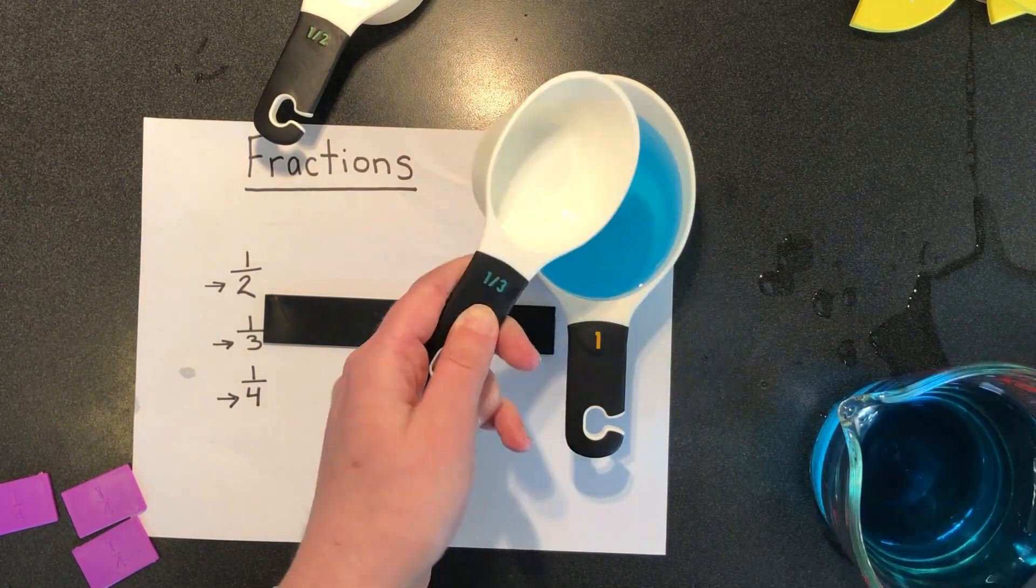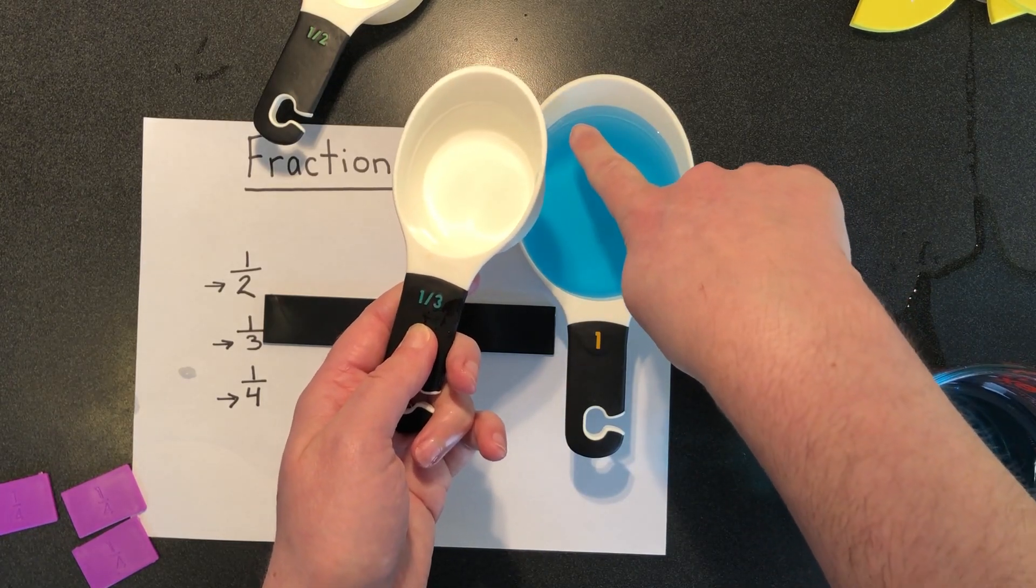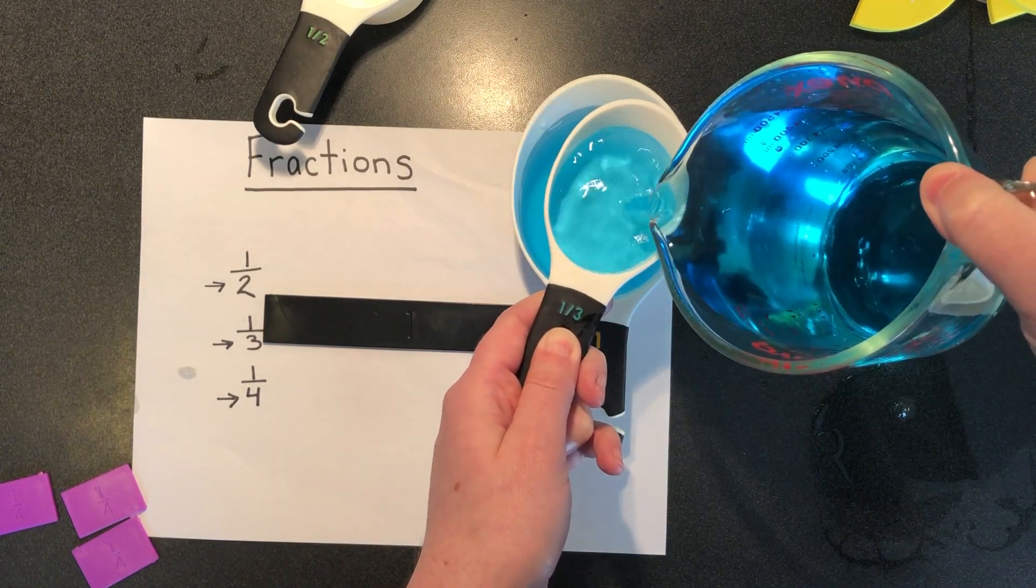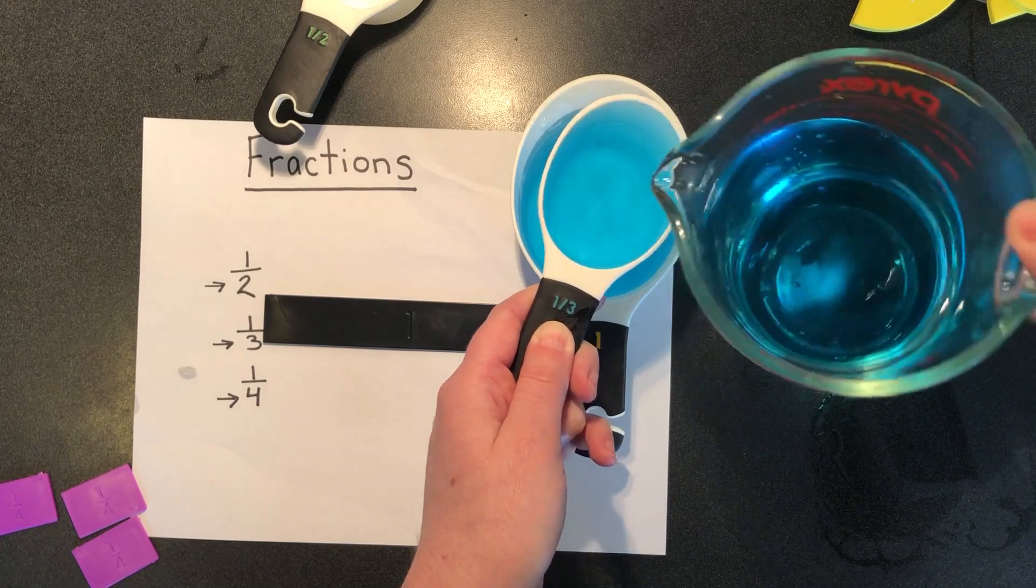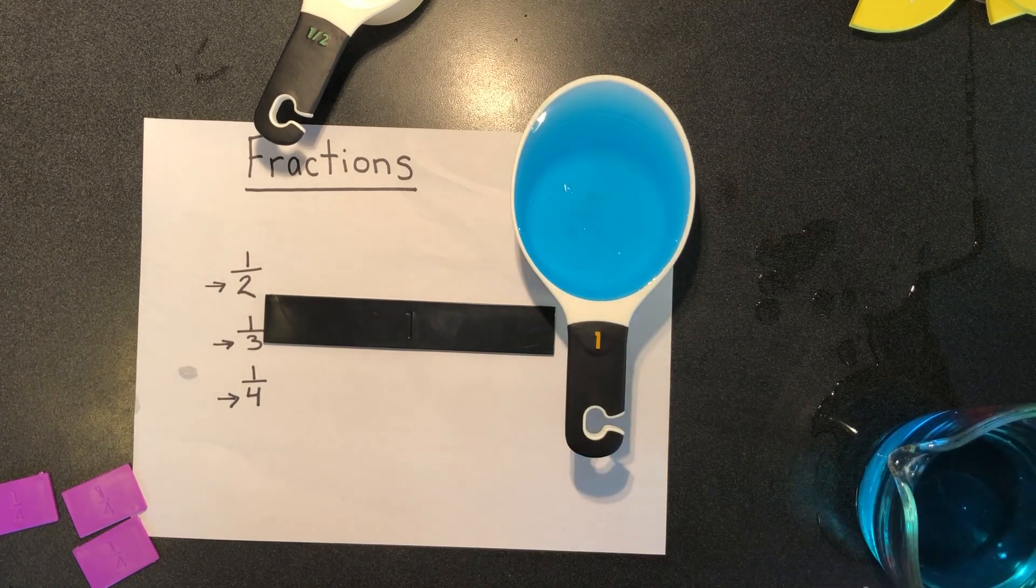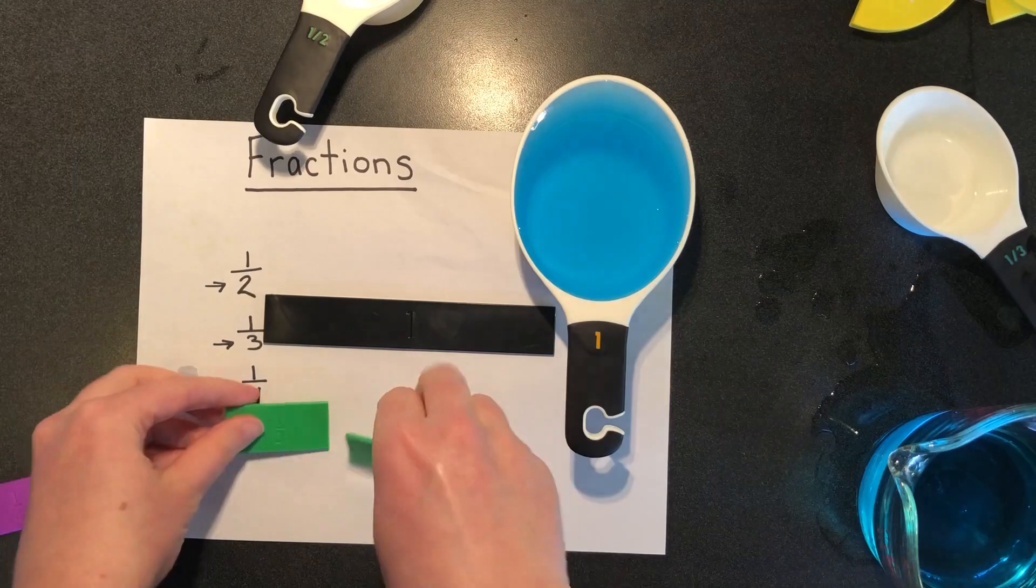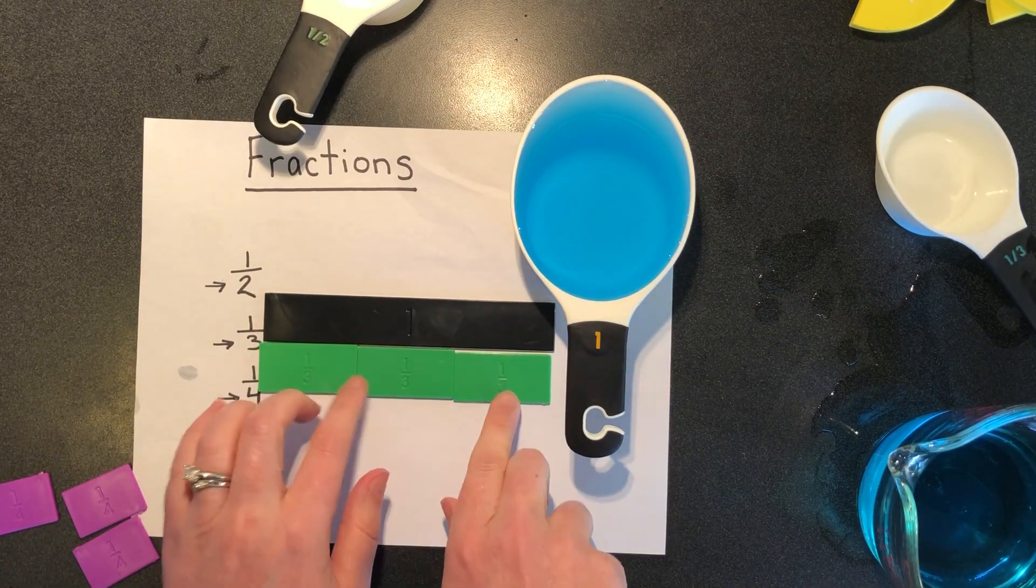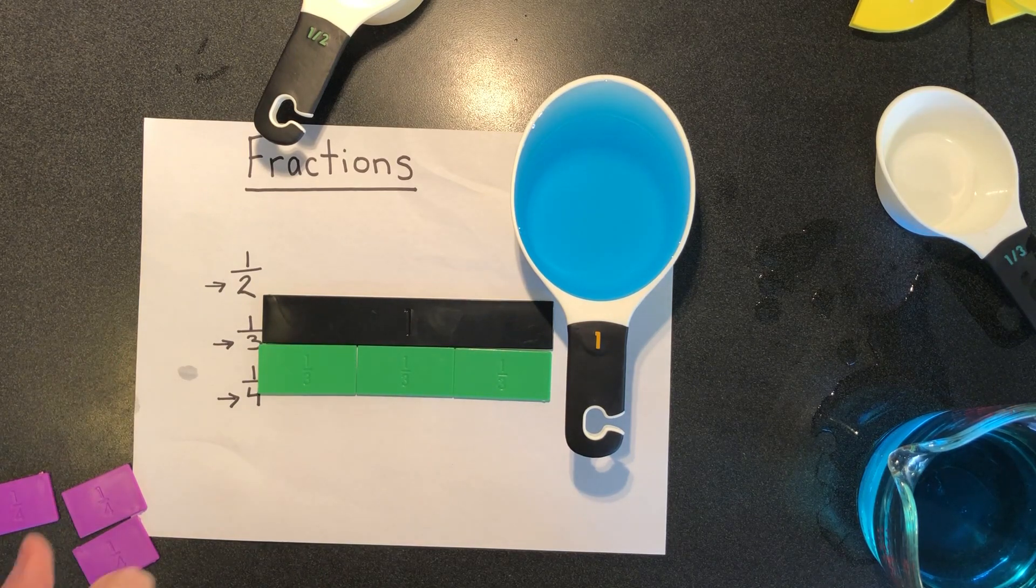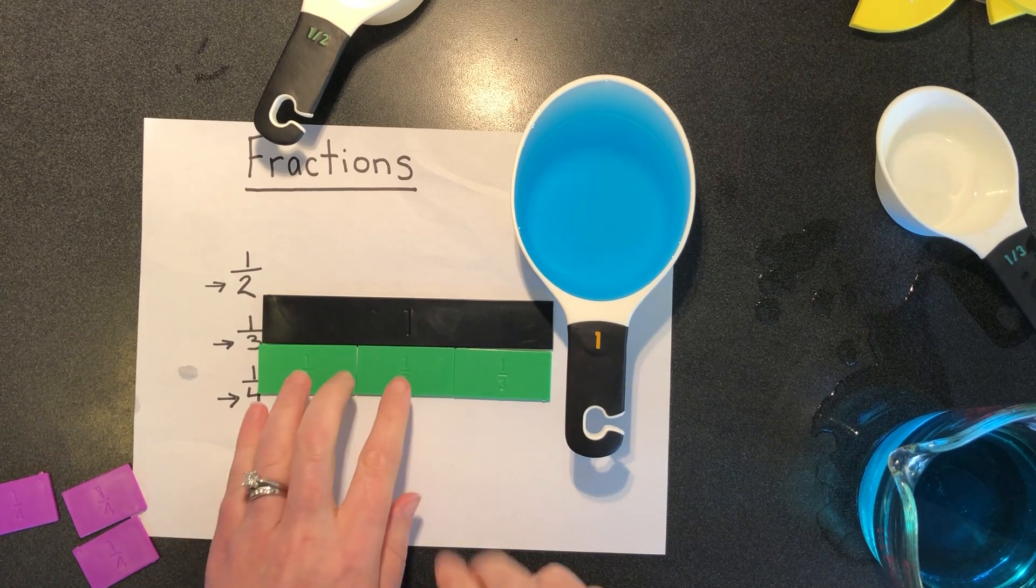Two thirds. And I can see that this actually went past one half so I could tell that two thirds must be bigger than a half. Three thirds. So it took me three thirds to fill one whole cup. I did one third of a cup another third of a cup another third of a cup and that got me to one whole cup.